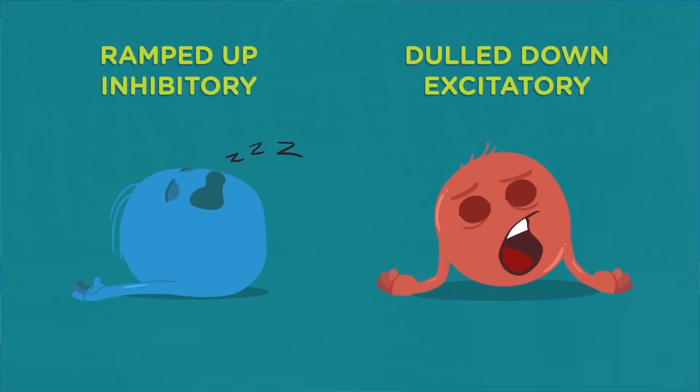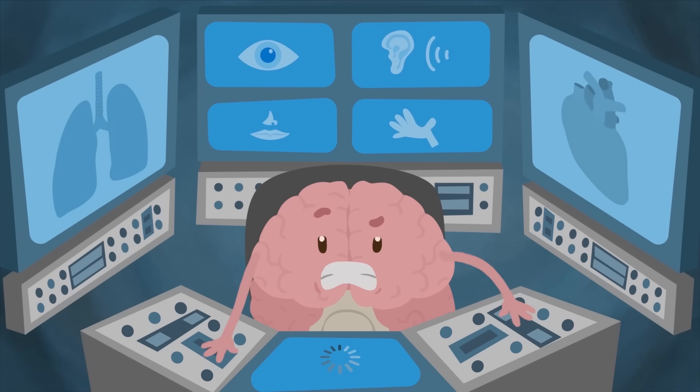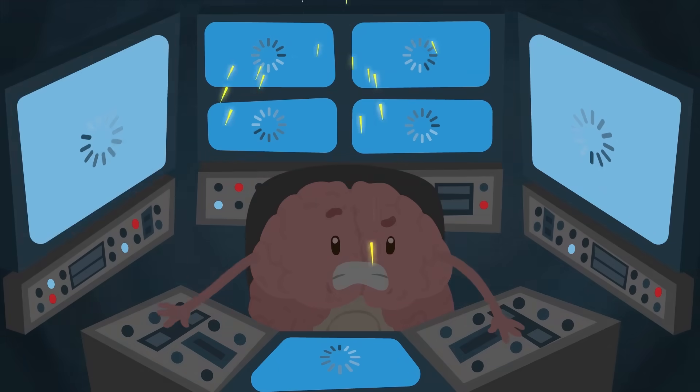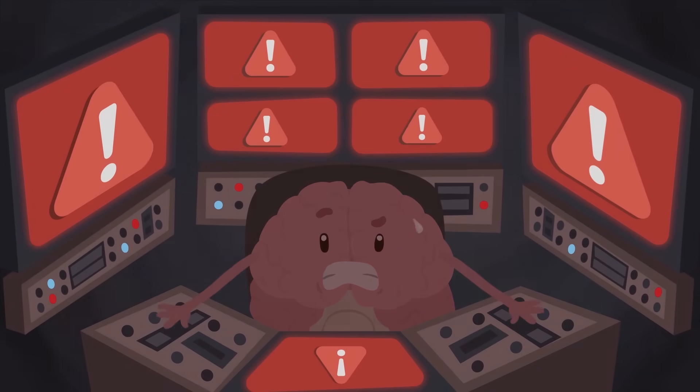You can probably guess what happens when you combine ramped up inhibitory neurotransmitters with dulled down excitatory neurotransmitters. All of your brain's different parts and functions become super slowed down, which can cause a wide range of physical, mental, and emotional effects.